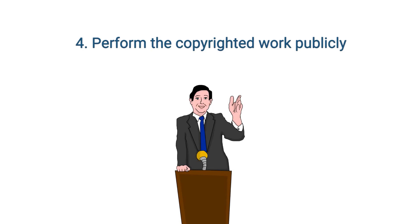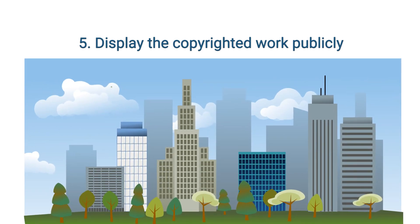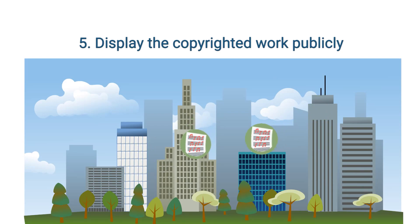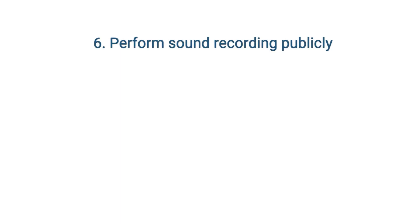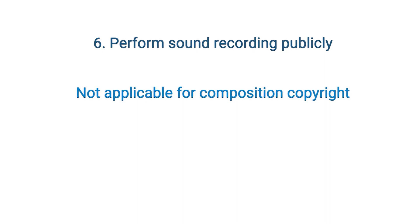Number five: to display the copyrighted work publicly. Example: printing the sheet music to a song and posting it in a public square. And number six: in the case of sound recordings, to perform the copyrighted work publicly by means of digital audio transmission. An example would not be applicable because this exclusive right deals with sound recordings, not the underlying composition copyright.